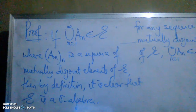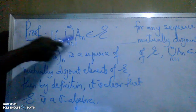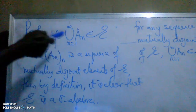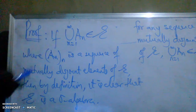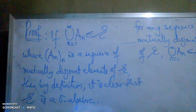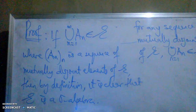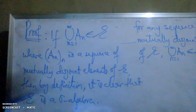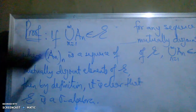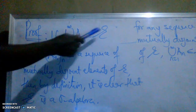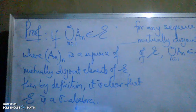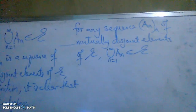We started by saying that if the union of the mutually disjoint elements — the sequence A_n — is in the algebra E, then by definition it obviously implies that E is a sigma-algebra. So that's the first aspect of the proof. Let's look at the second aspect.